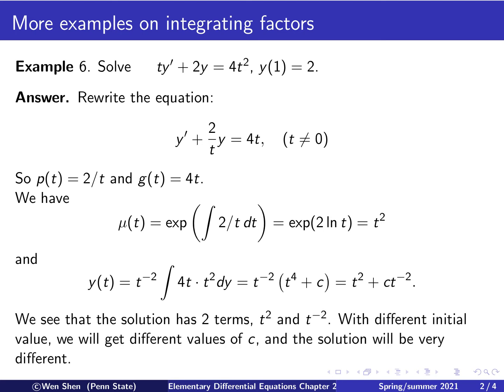So what about the behavior of the solution? We see that in the solution we have two terms. One is t squared, and the other is t to the negative 2. So this term is present, but the second term here has a constant c in front of it, which is an arbitrary constant, and it will be determined by the initial condition. So for different values of initial condition, we will get different values of c, and the solution would behave quite differently.